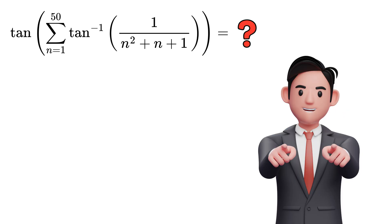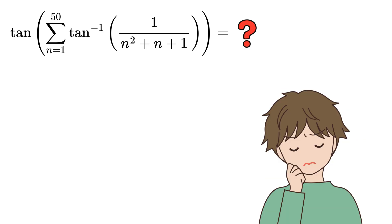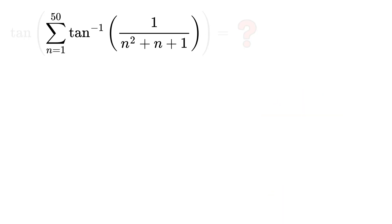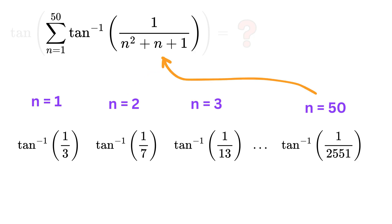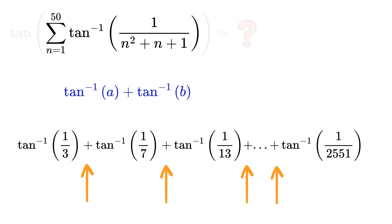So can you solve it? The very first thing that comes to our mind is that we need to calculate the tangent inverse again and again for every value of n, like substituting n equal to 1, then 2, and so on till 50, and then sum each of these tangents using tangent inverse a plus tangent inverse b formula.